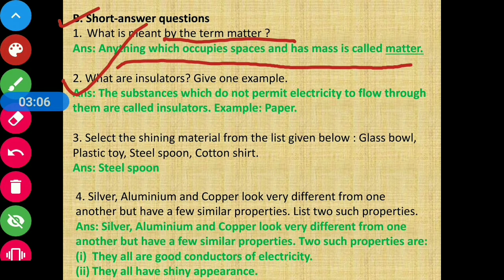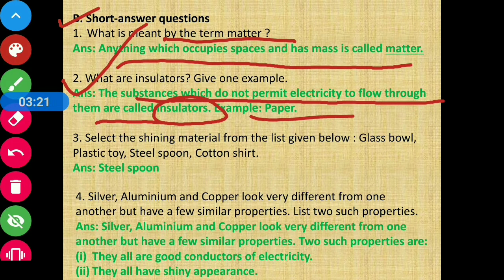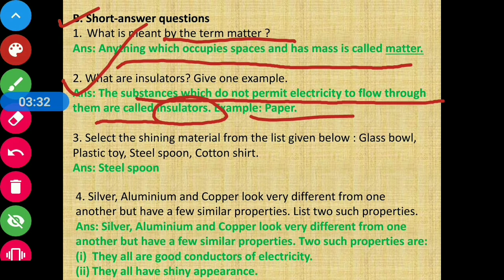Question number 2: What are insulators? Give one example. Answer: The substances which do not permit electricity to flow through them are called insulators. Example: paper.